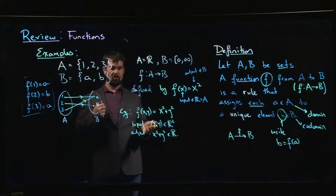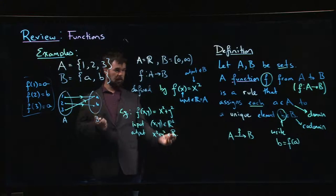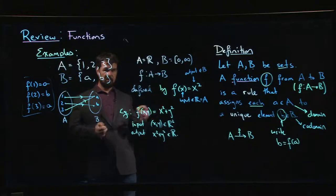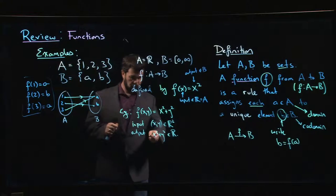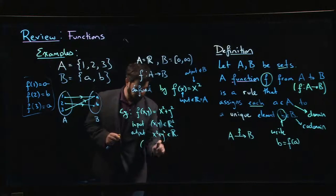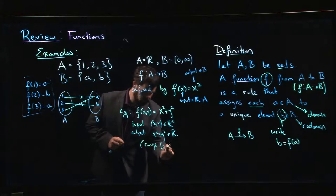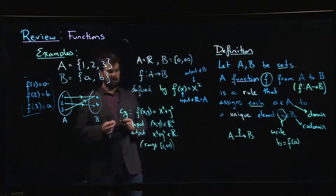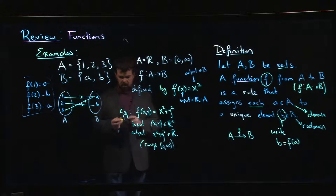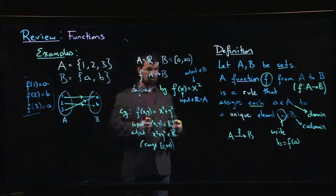You can talk about the distinction between range versus codomain. The range is the set of all outputs that your function has. So here we might say the codomain is R, but the range is the set of real numbers from 0 to infinity.